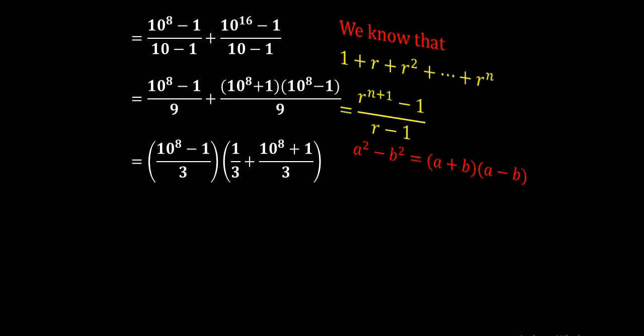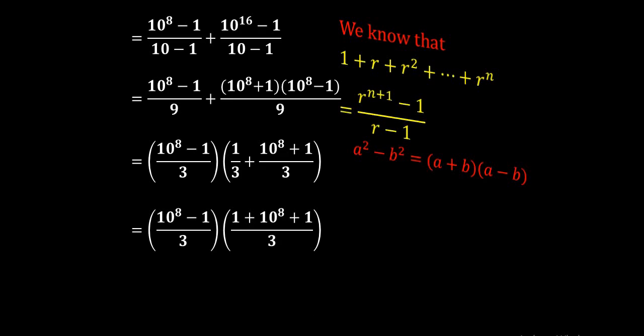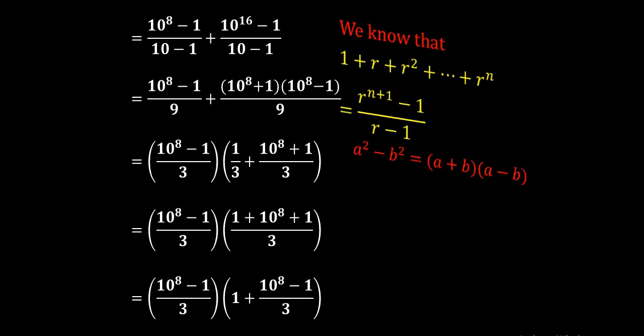Taking the LCM in the second bracketed term — LCM is 3 — we get 1 plus (10⁸ plus 1) divided by 3, which equals (2 plus 10⁸) divided by 3. Writing it as (3 minus 1 plus 10⁸) divided by 3, we see it simplifies to (10⁸ minus 1)/3 plus 1. So we can write it as (1 plus (10⁸ minus 1)/3) times ((10⁸ minus 1)/3).